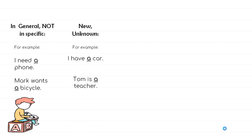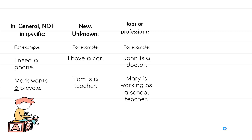When talking about things that are new, unknown, or introduced to the listener for the first time, we use indefinite articles. For example, 'I have a car' and 'Tom is a teacher.' We don't know which car or what subject Tom teaches. With jobs, professions, nationalities, and religions in singular, we also use indefinite articles — for example, 'John is a doctor' and 'Mary is working as a school teacher.'